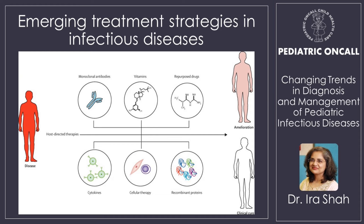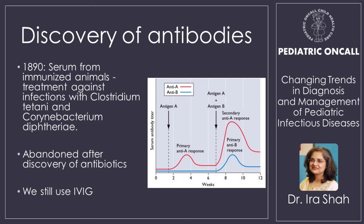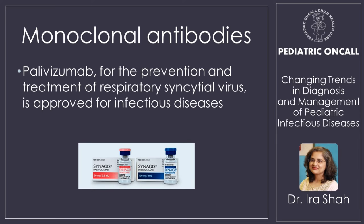Following microscope discovery, we had emerging treatment strategies. We developed drugs, monoclonal antibodies, antibiotics, looked at cytokines and cellular therapies. For malaria in 1630, quinine was imported from Brazil and Peru. Antibodies were discovered when they injected animal serum against Clostridium tetani and diphtheria — we still use anti-diphtheric serum, though now a recombinant version rather than equine. These were largely abandoned after the discovery of antibiotics, and now we mainly use IVIG and monoclonal antibodies like palivizumab for prevention and treatment of RSV.